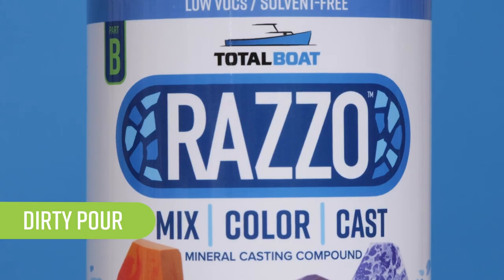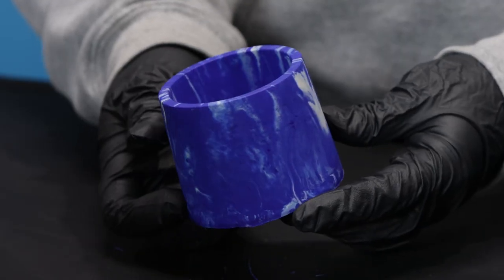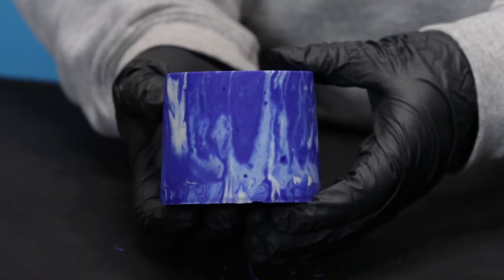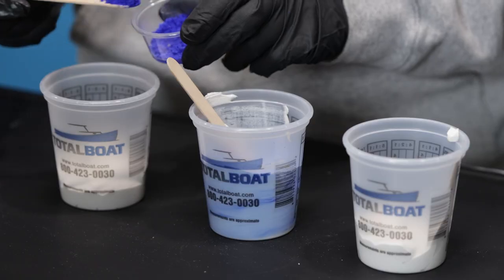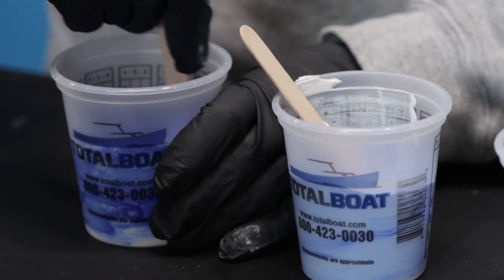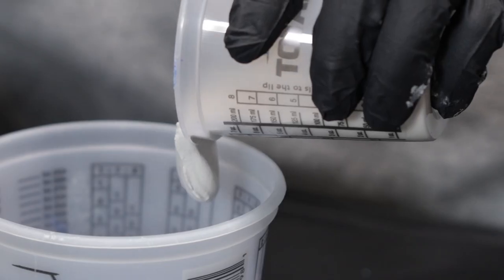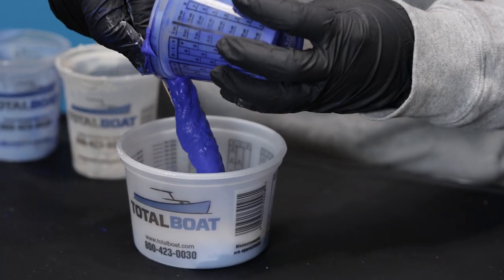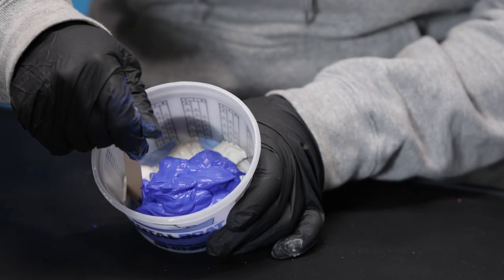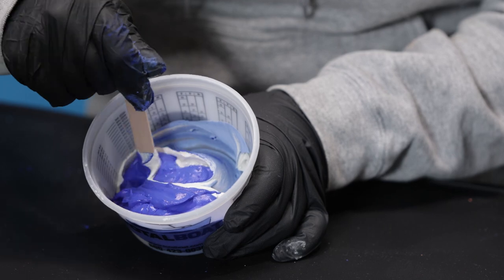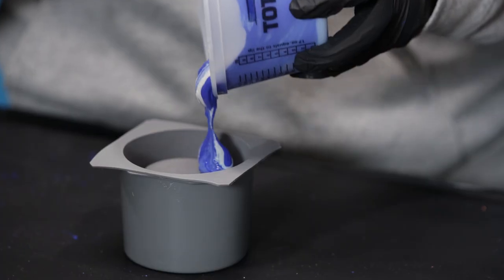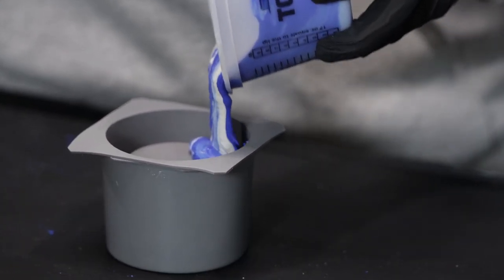Dirty pour: Create a unique and unexpected creation with ribbons of color throughout. Add pigment to create three or more colors of Razzo. Layer those colors in one cup, creating as few or as many layers as you want. Without mixing the colors together, you can fold them over to create more visual interest. Pour from your single cup into the mold.